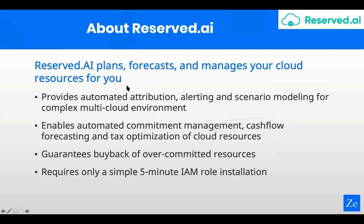Thank you so much for the awesome demo. Just to give a little background on Reserved AI: what we enable customers running on the cloud across Azure and AWS to do is proactively forecast and manage cloud resources in a completely automated way. We enable folks running across complex multi-cloud deployments to do things like commitment management, cash flow forecasting, and tax optimization. We also buy back overcommitted resources from customers, essentially making a market — integrating with over 300 APIs in the AWS land, 200 APIs in Azure, and a ton of different APIs from Kubernetes clusters we're monitoring for cost and attribution.